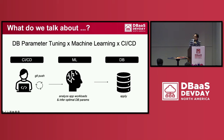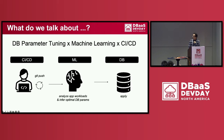We integrate machine learning models into a CI/CD system to automate the tuning process. When application developers put their code into a CI/CD system, we let the CI/CD system analyze the application workload, infer optimal parameter settings with machine learning models, and apply the inference result to the target database automatically.